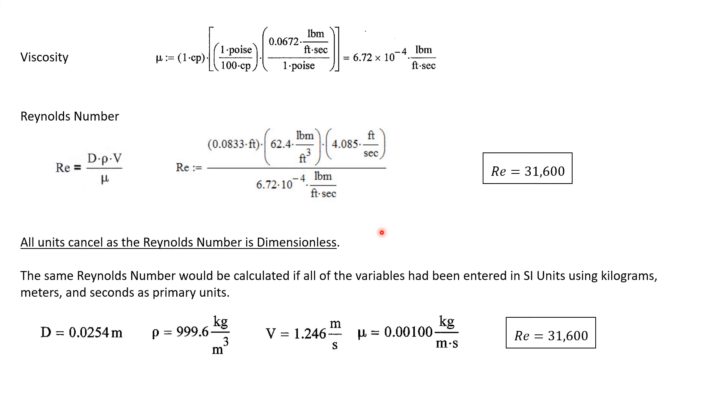So what would have happened if we had wanted to calculate the Reynolds number using SI units? Well, in that case, we would have calculated a diameter of 0.0254 meters. The density would be just shy of 1000 kilograms per cubic meter. We would have calculated a velocity of 1.246 meters per second. And the dynamic viscosity would have been 0.001 kilograms per meter second.